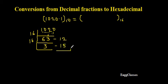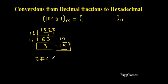So the remainders give us the hexadecimal equivalent of the integer part. Reading them: 3 in decimal is 3 in hex, 15 is F, and 12 is C. So 3FC is the hexadecimal equivalent of the integer part 1020.